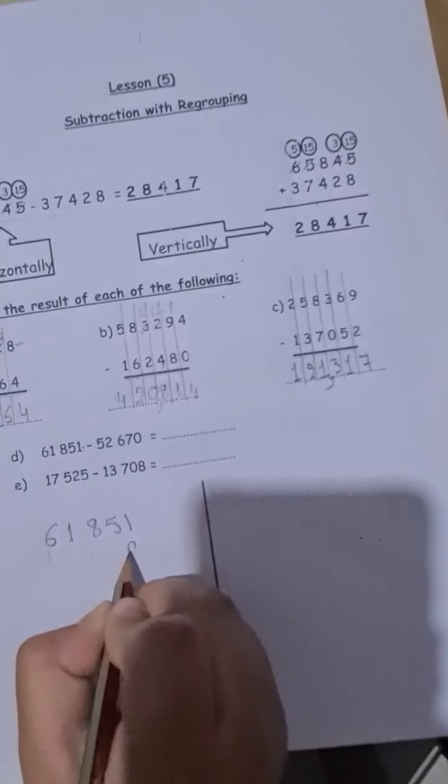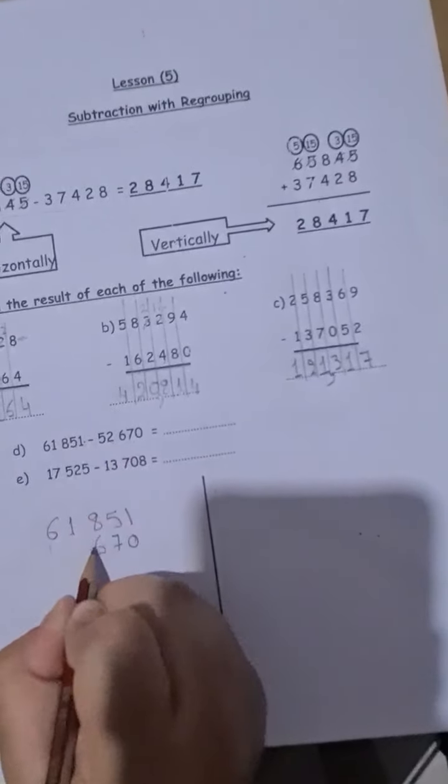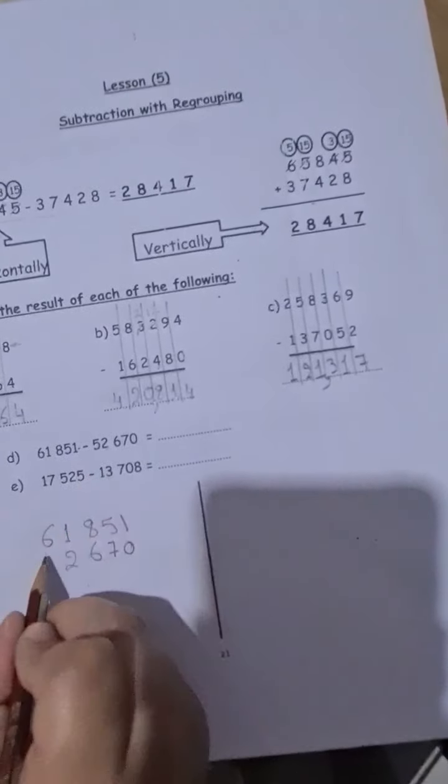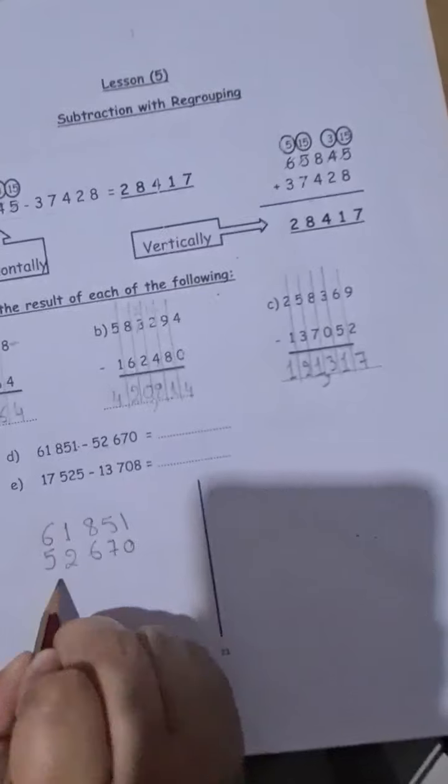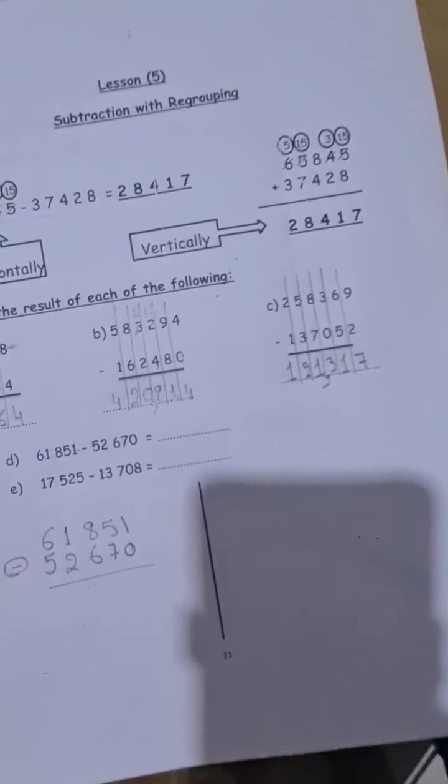Here, ones under ones, 0. 7 under the tens, tens under tens, 6 under the hundreds, 100 under hundreds, 2 under the thousands, and 5 under the ten thousands. And I'll draw the line. And here is minus.